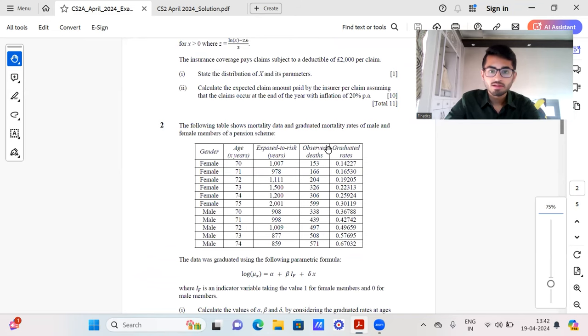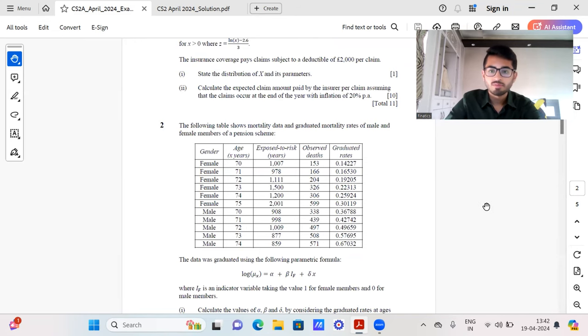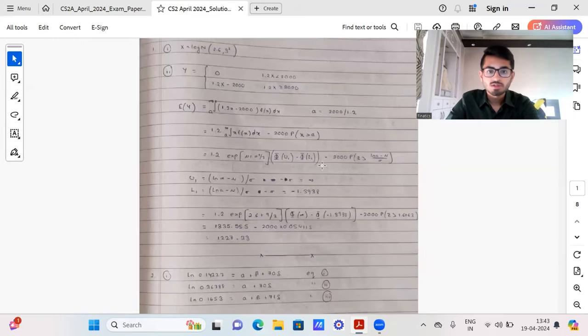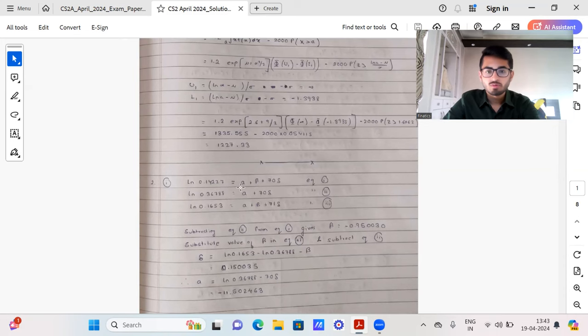Next question number two again rather a direct one. So part one is calculating the values of alpha beta and delta by considering the graduated rates at age 70 and 71. So there are four possible values. Female 70, female 71, male 70, male 71. You could take any three of them. I took female 70, female 71 and male 70. So log of 0.14 double two seven is this, these are the three equations. You subtract the first two equations, you get the value of beta. You might substitute the value of beta in part three. And from there you will get the value of delta. And then you can substitute that value in any of the equations and you should be getting the value of alpha as well.